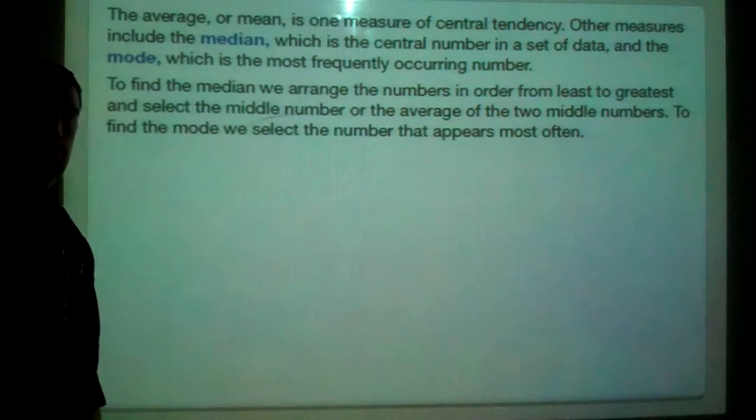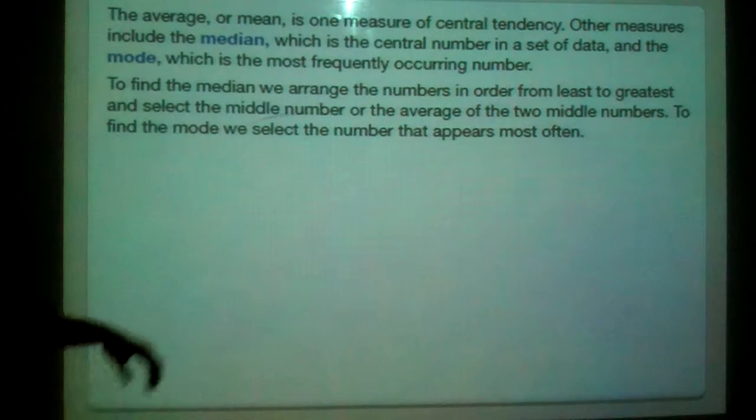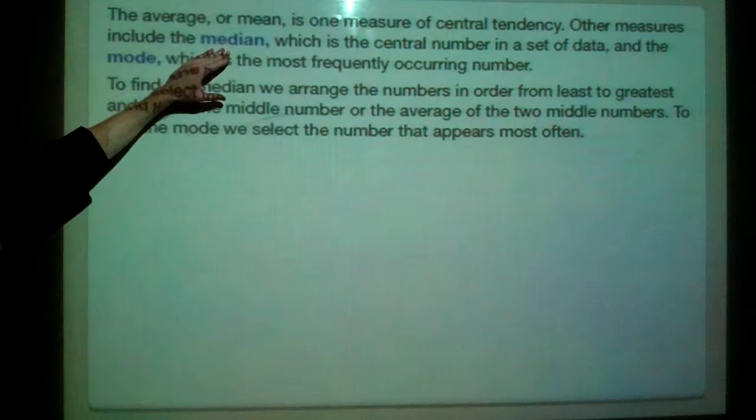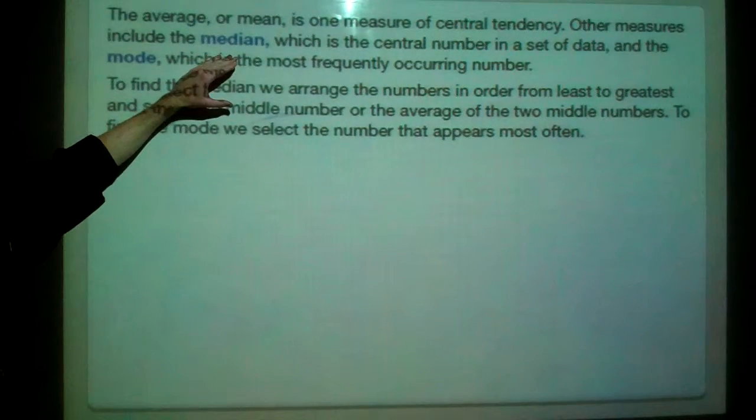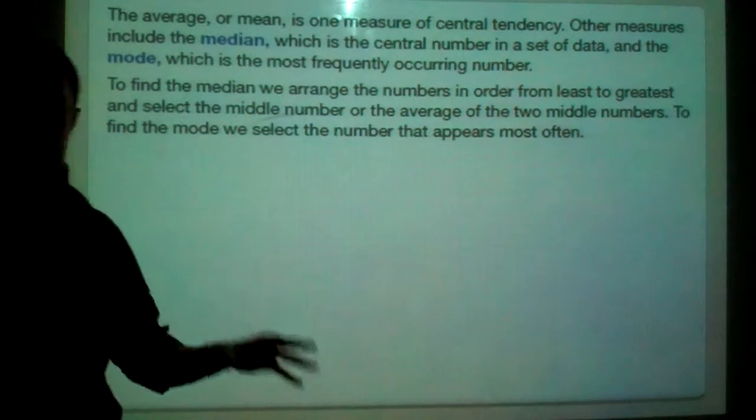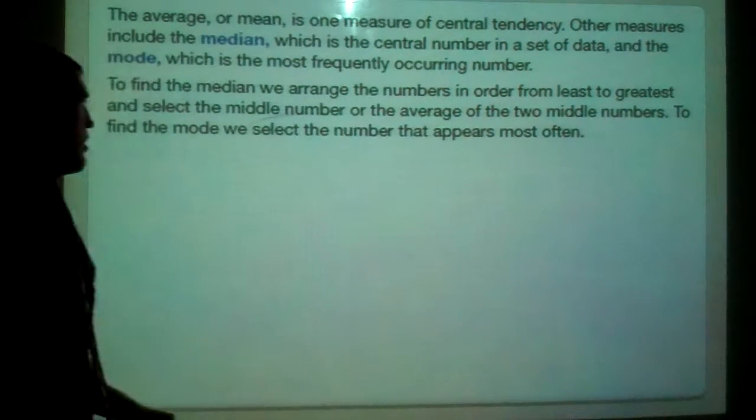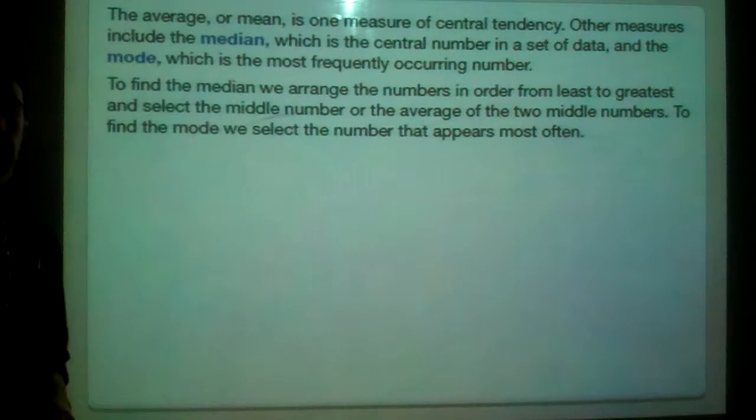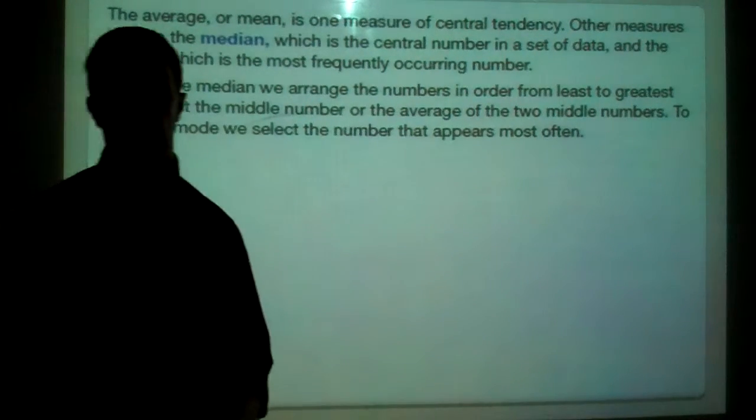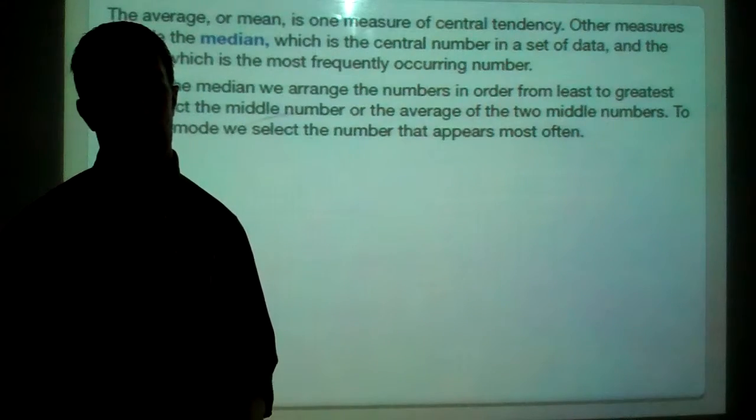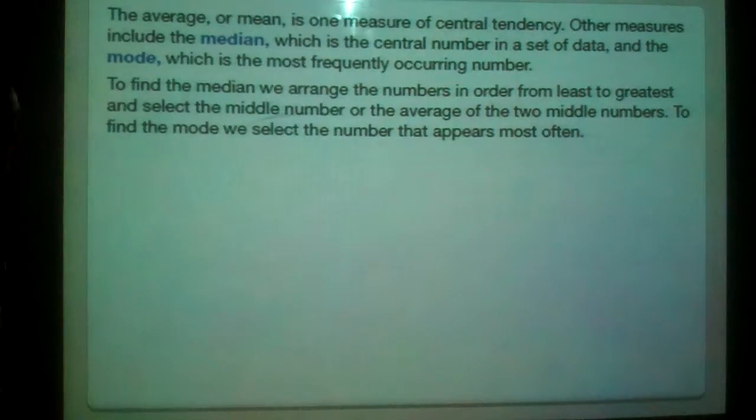And two other central measures are median and mode. Median is when we order all the numbers and find the one that's in the middle. So the first thing you have to do is put the numbers all in order and then find the one that's in the middle. And mode is the easiest one because mode just means the most frequent number or the one that appears the most.